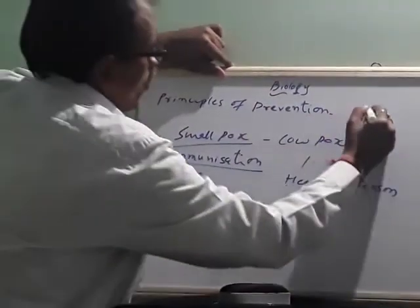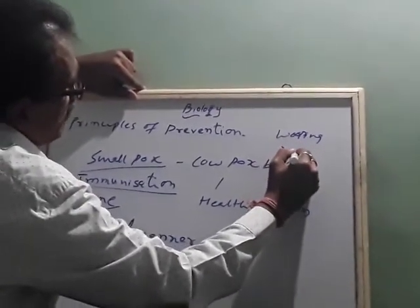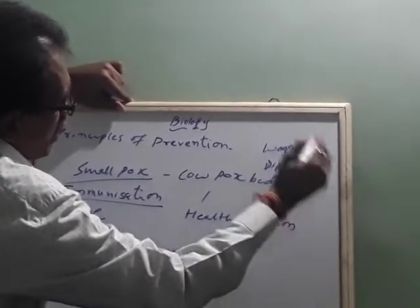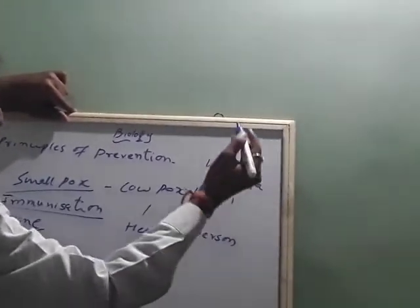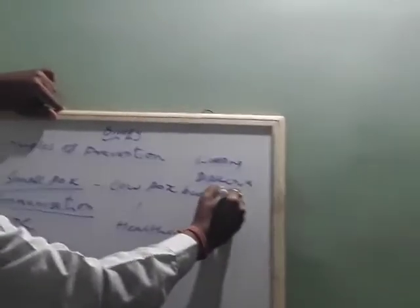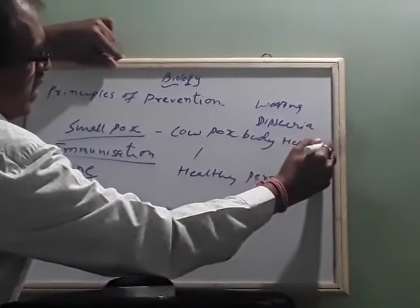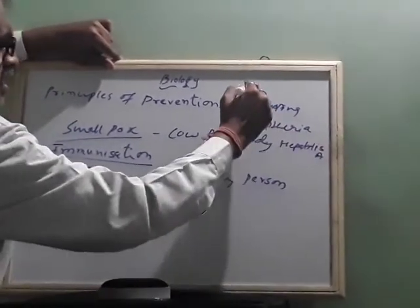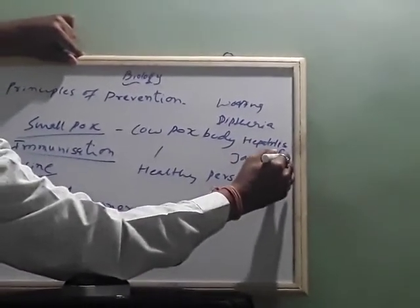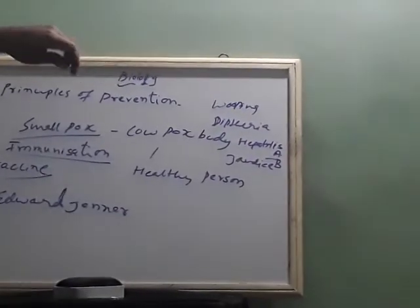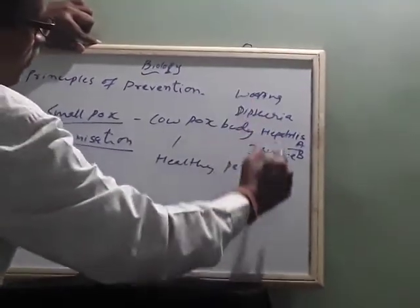For example, whooping cough, diphtheria, hepatitis A and B — jaundice is caused due to hepatitis A and B — and polio also. To prevent these diseases, there is an immunization program.